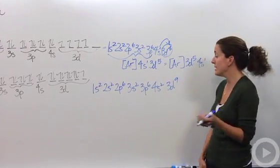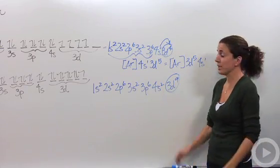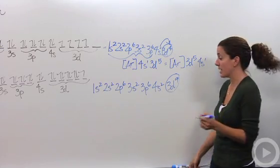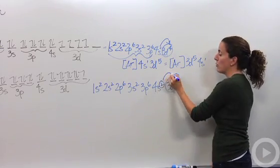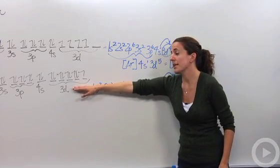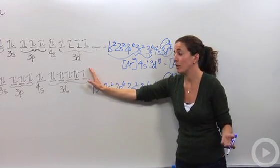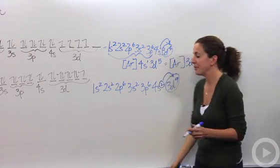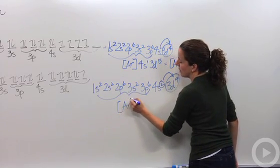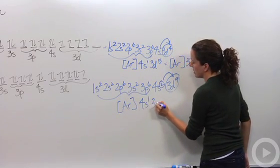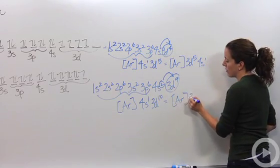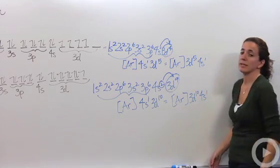From here on out, anytime you see d9, we're going to change it. Same exact way — we're going to take an electron from the 4s and move it over to the 3d. That way, the d-sublevel will be completely filled, which is very stable, and the s-orbital will be halfway filled. So we write this as argon, 4s1, 3d10. Again, you might also see it as argon, 3d10, 4s1 — same exact thing.